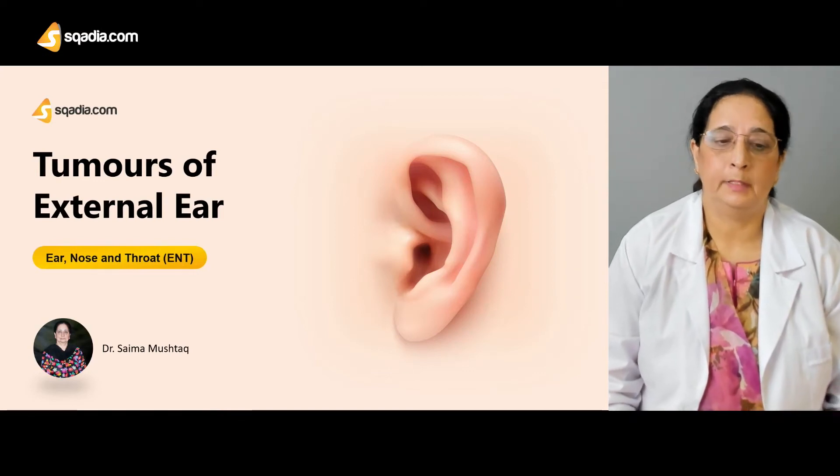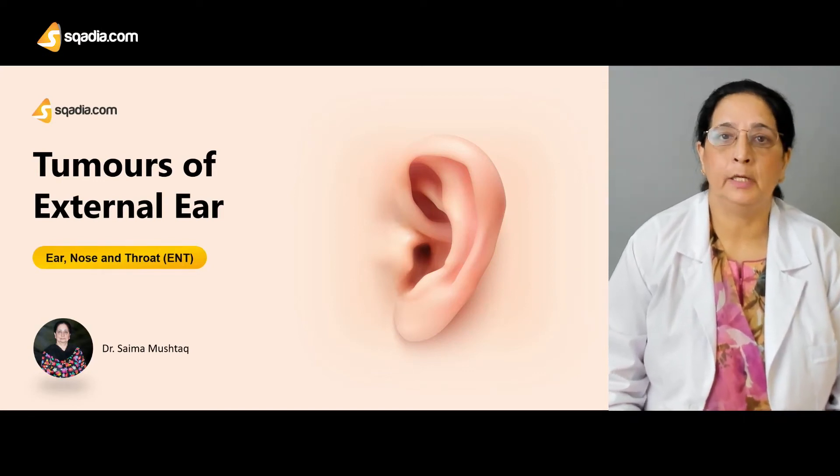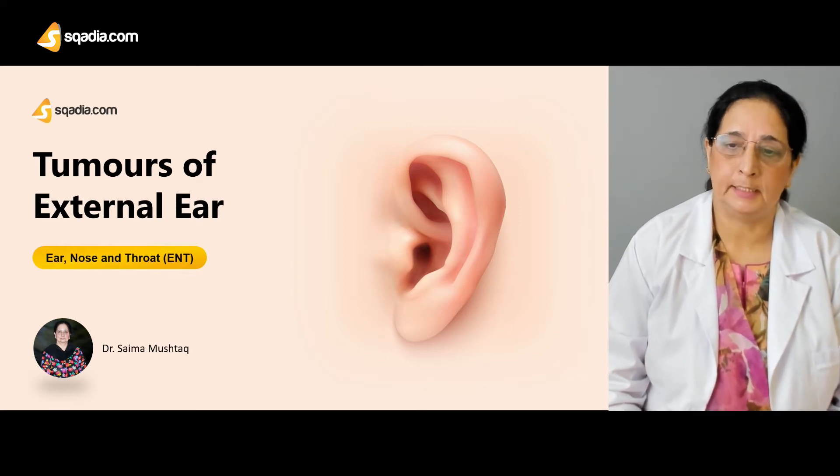Today's topic in ENT, or ear nose throat, is the tumors of the external ear. When we say external ear, we are basically talking about two very important parts: the pinna, also called the auricle, and the external auditory canal. These are the two structures that constitute the external ear.